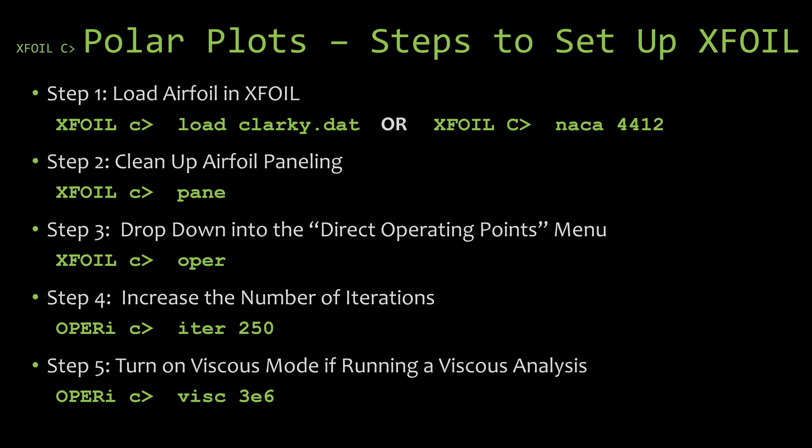The next step would be to turn on the viscous mode and provide the Reynolds number that you want the analysis to be performed at. So at the command prompt just type visc and then the Reynolds number. I went ahead and chose 3 million for this analysis.